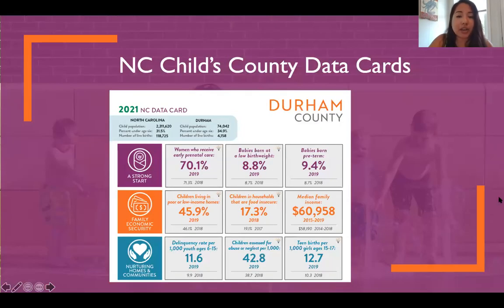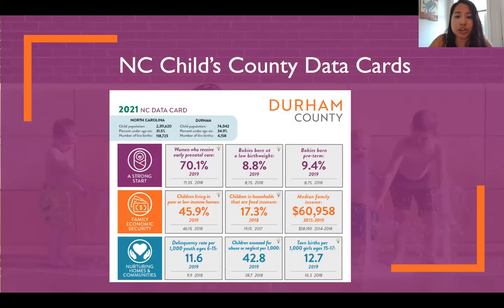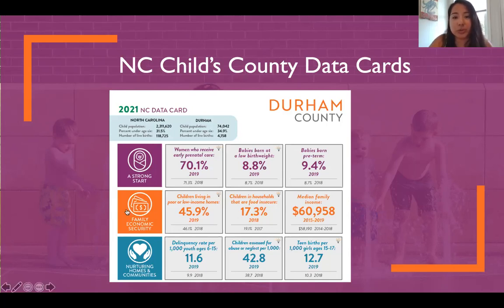NC Child's county data cards are a good place to start when looking at county data. These data cards provide a data snapshot of kids across 15 key indicators of children's health and well-being across our four focus areas. From early start in life to health and wellness, you can find different up-to-date data points. They also include basic demographic data on children for each county. This year was the first year that we actually released these county data cards in an interactive format with data available by race and ethnicity, so I encourage you all to explore that new data dashboard on our website.